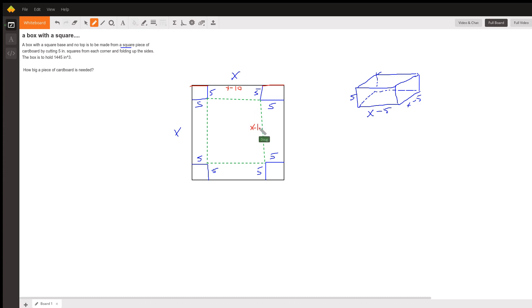The original side of the cardboard take away two fives, and then when we fold up the sides of the box, this five-inch square will be the height of the box. So we're really using the formula volume equals length times width times height.